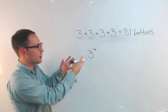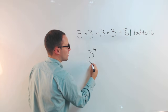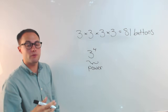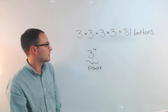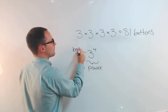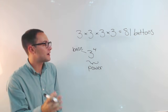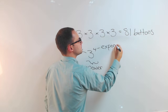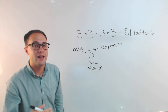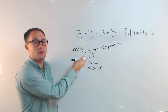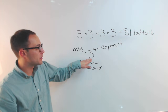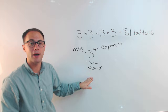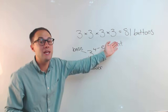Let's talk about each part of this power. The whole thing is called a power, and a power is just another way of writing the product of repeated factors. This three is called the base, and that just shows what factor is being repeated. The four is called the exponent, and an exponent shows how many times the base or factor is being repeated. So the three is being repeated four times — one, two, three, four — and all together we call that a power, just another way of showing repeated multiplication.